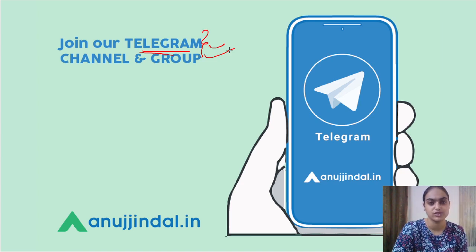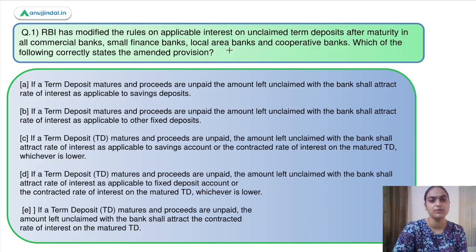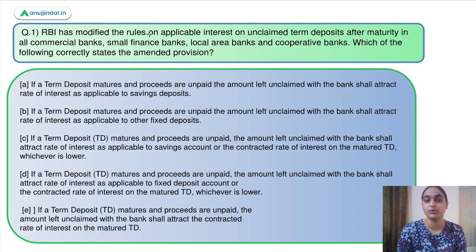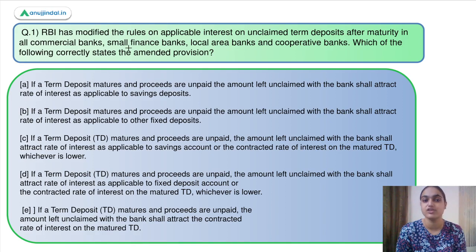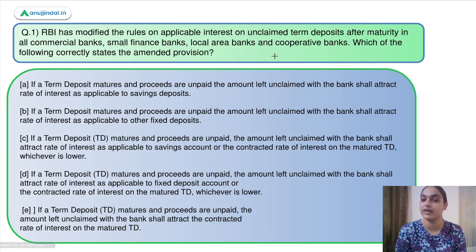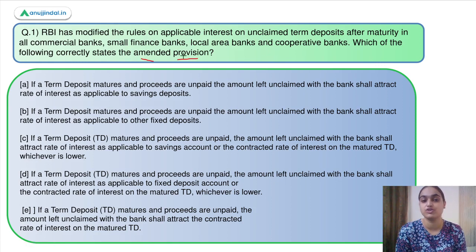Let's move on to question number one, which says: RBI has modified the rules on applicable interest on unclaimed term deposits after maturity in all commercial banks, small finance banks, local area banks, and cooperative banks. Which of the following correctly states the amended provision?